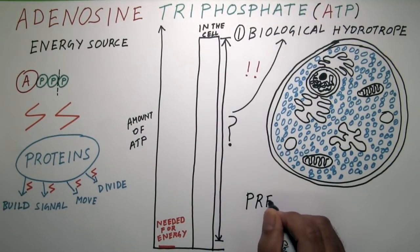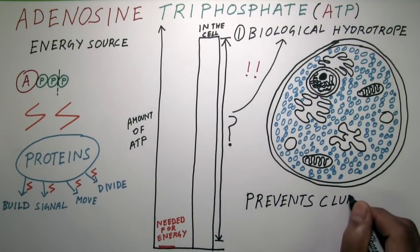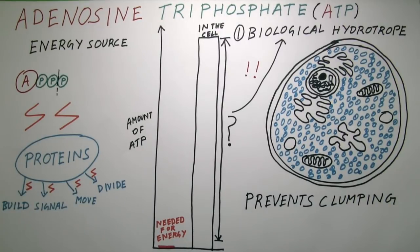So maybe during evolution the first role of ATP was to keep things from clumping together, and since there was so much of it around, it was later adopted as the important source of energy we know it as today.